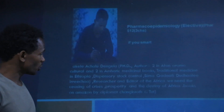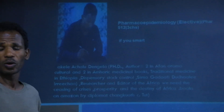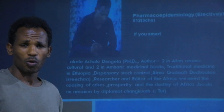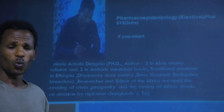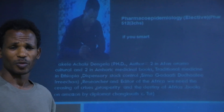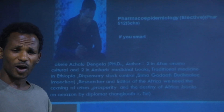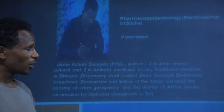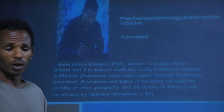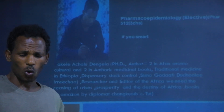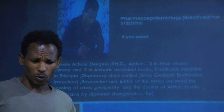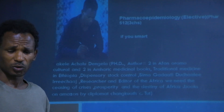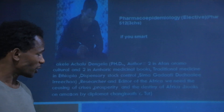Pharmacoepidemiology comes from Greek terms: pharmakon plus epidemiology, or pharmakon plus epi plus demos plus logos. Pharmakon means drug. Epi means upon or among. Demos means district or population. Logos means study or doctrine.